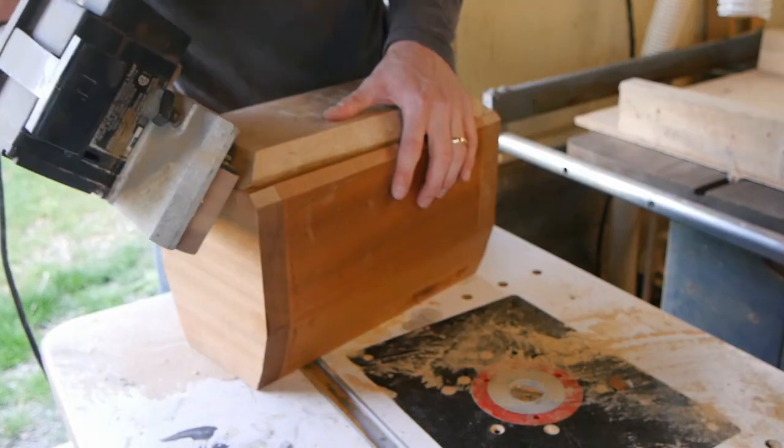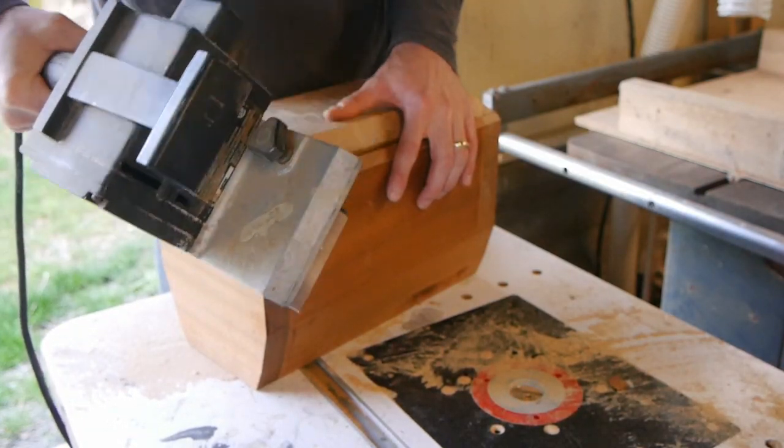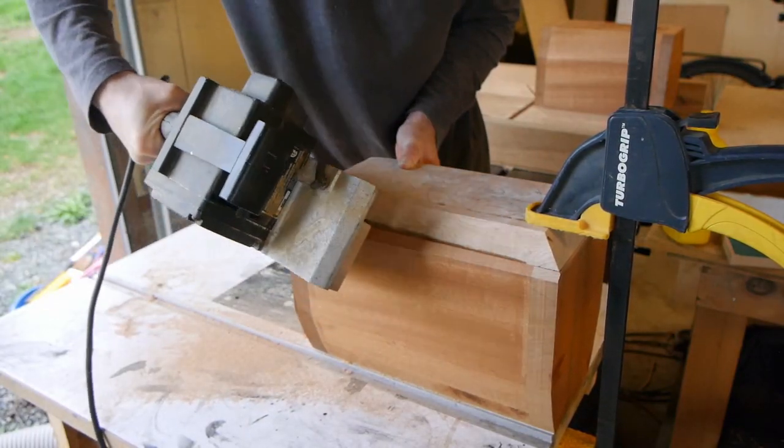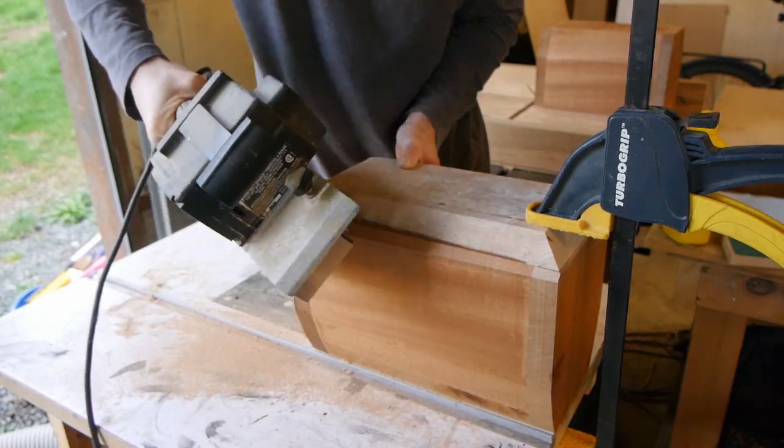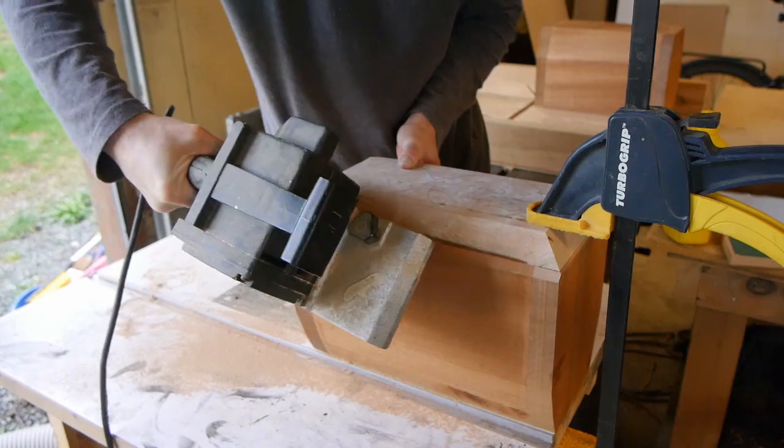So I happily went to town with my belt sander, started giving this thing some shape and trying to take out that little problem where the baffle was short. This process didn't take as long as you would think. Belt sanders are pretty efficient at removing material.